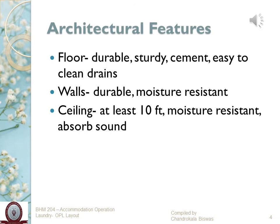Once your location is decided, let's talk about the architectural features. Just like your linen room, your laundry should also have very sturdy, durable floors — you can use something like cota stone or cemented flooring. This is important because you are going to have very heavy machineries set up in the area, and there will be a lot of trolleys moving around inside your laundry full of soiled or fresh clothes. You don't want the flooring to get damaged, so pick durable and sturdy material that is also easy to clean and easy to drain water from in case of any leakage.